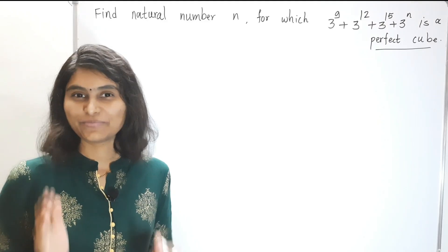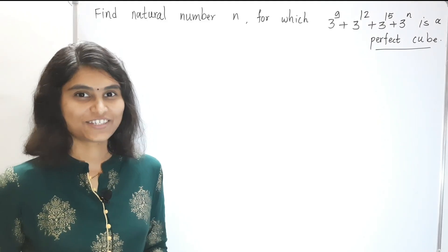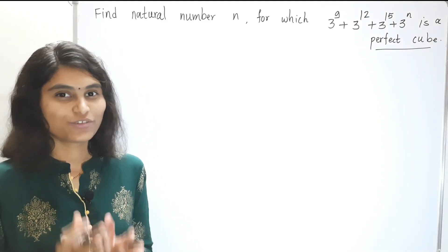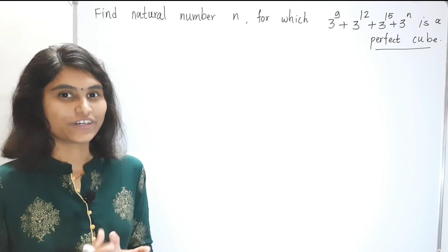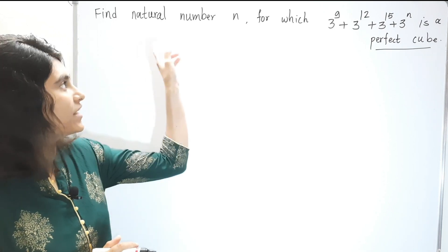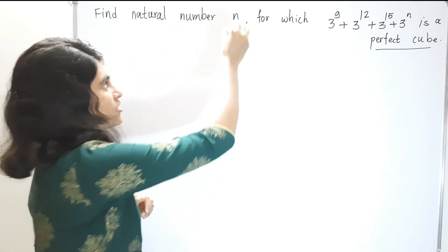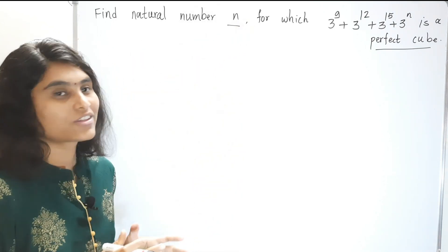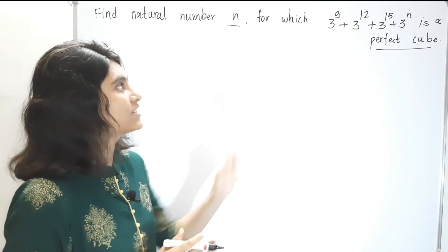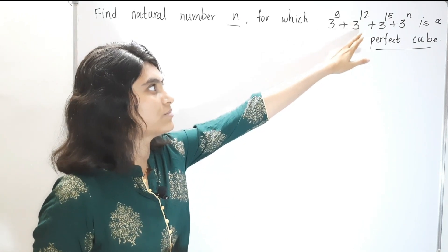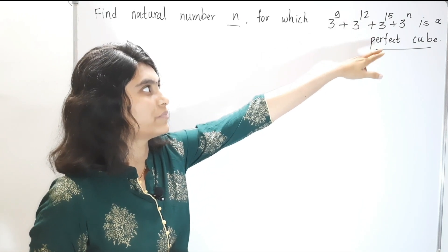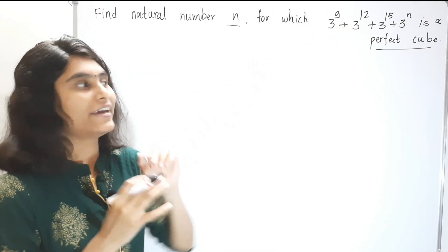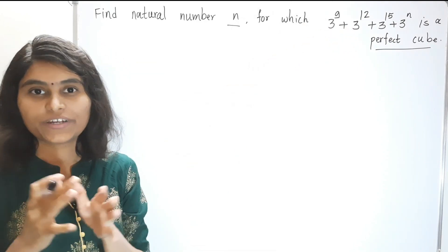Hey everyone, welcome back to another interesting video. In this video, we are going to solve a question in which we have to find a natural number n for which the number 3^9 + 3^12 + 3^15 + 3^n is a perfect cube.